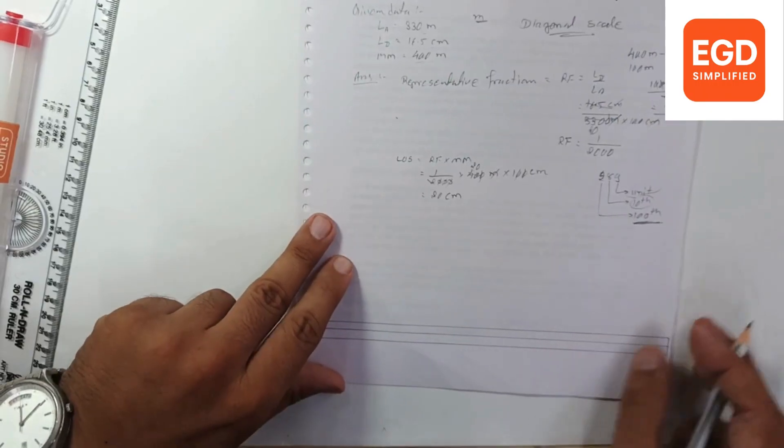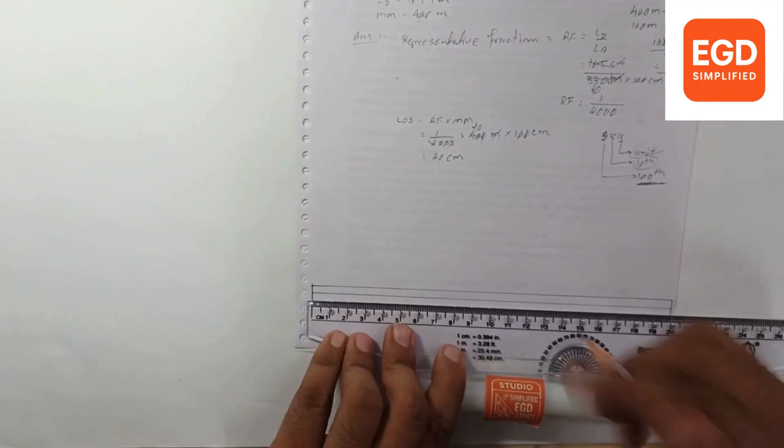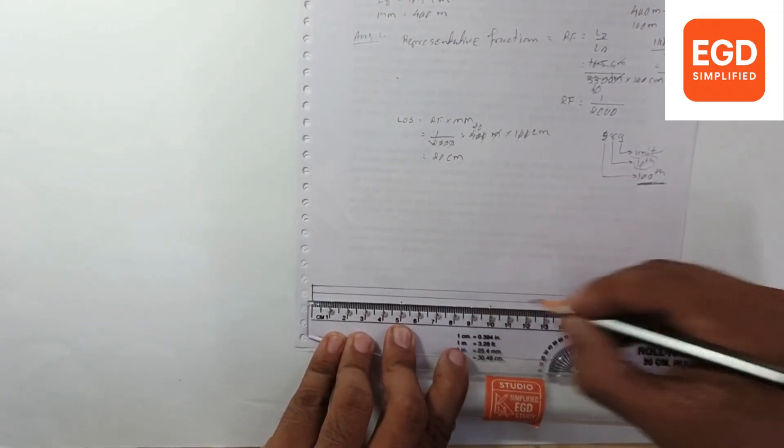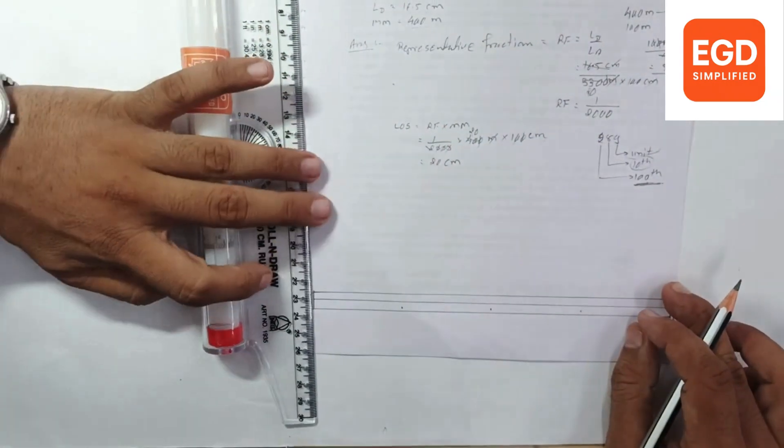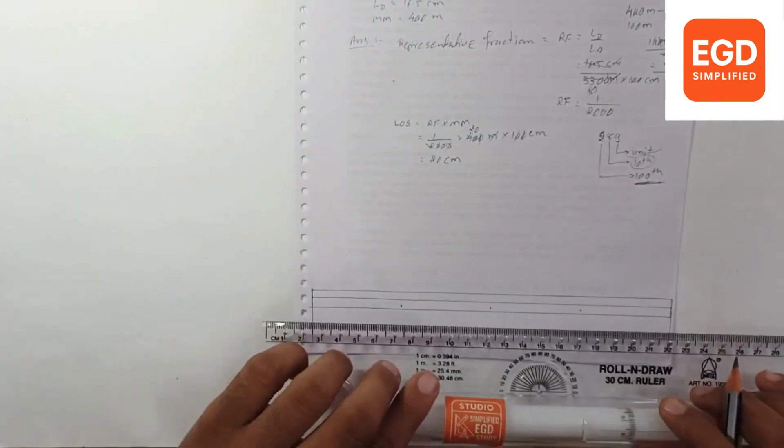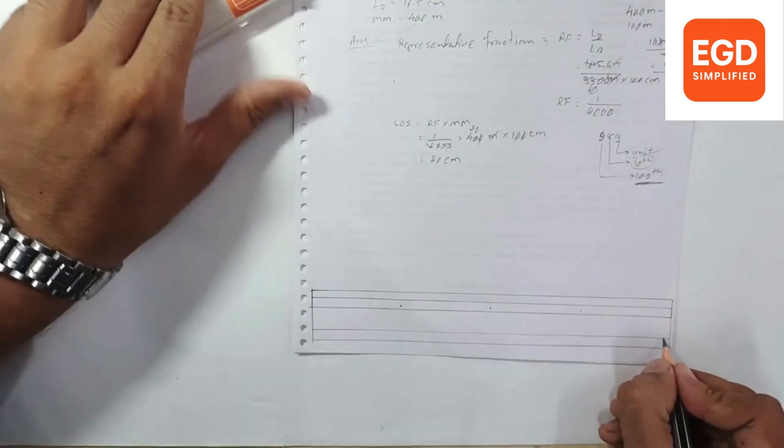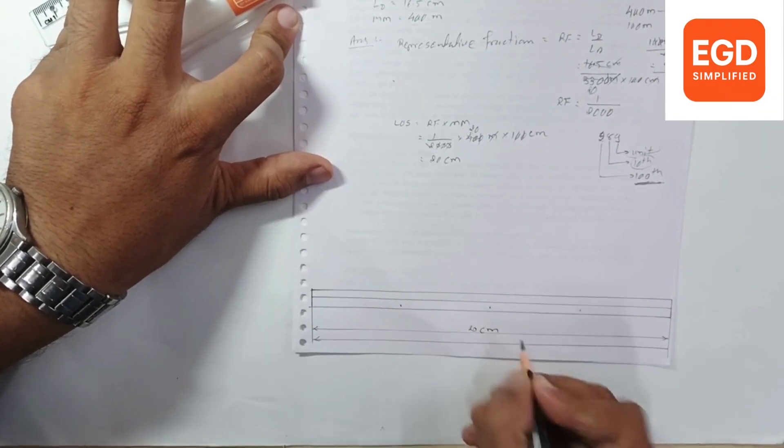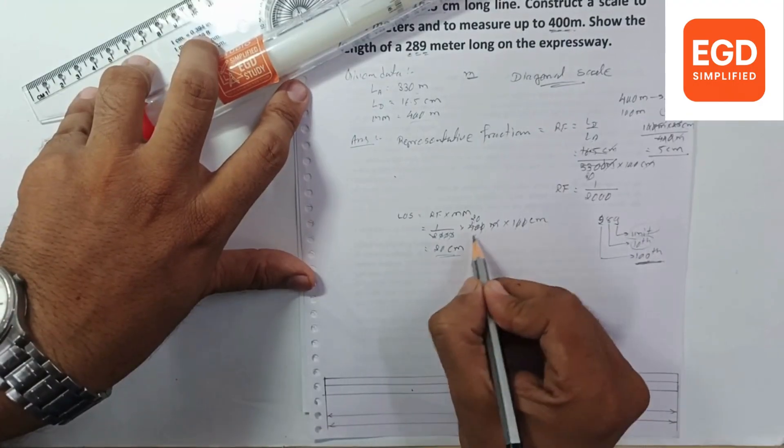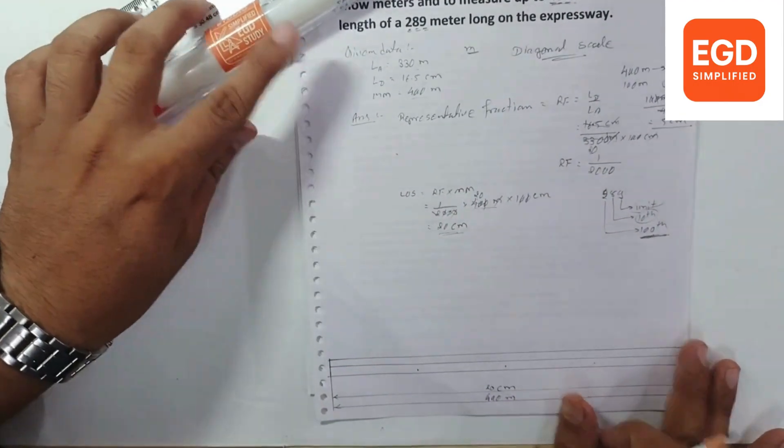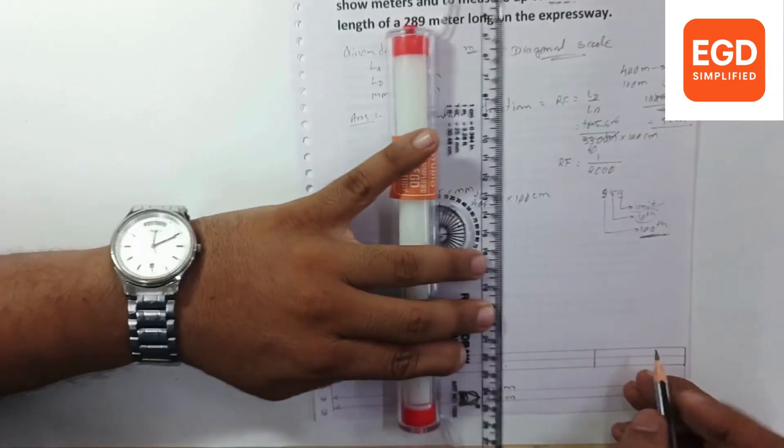So at every 5 centimeters we will plot the divisions. Take a measurement of 5 centimeters. Give the measurements and dimensions. The whole line is 20 centimeters long which represents 400 meters. As we have derived here, 20 centimeters long which represents 400 meters. Now plot the blocks.